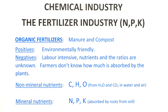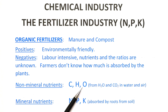The non-mineral nutrients are carbon, hydrogen and oxygen, which the plants get from water and carbon dioxide in the air. Mineral nutrients are nitrogen, phosphorus and potassium. These are absorbed by roots from the soil.